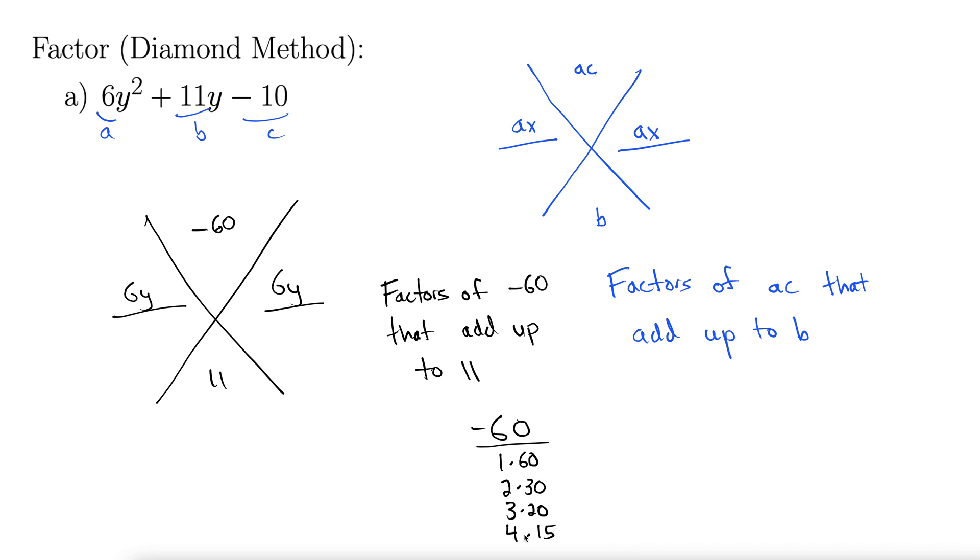So we want these to multiply to negative 60. So now we fix the negatives. Let's do negative 4 times 15. That way, when we multiply them, we get negative 60. But when we add them, we get positive 11. So this is what we're looking for here. There's our factorization.